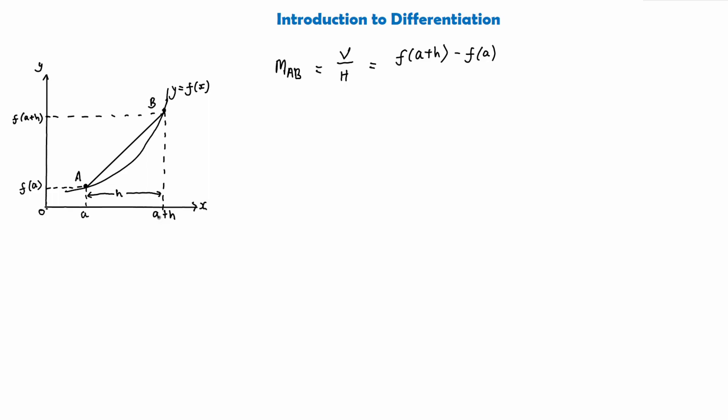and this is a fraction, and if we simplify that, we would say that the gradient of the line AB is going to be f(a + h) minus f(a)